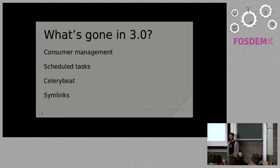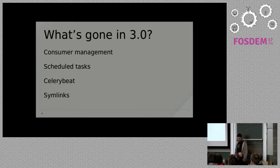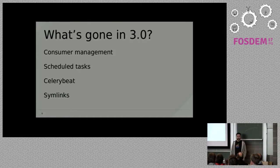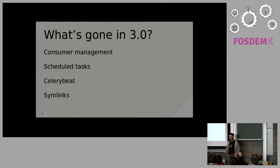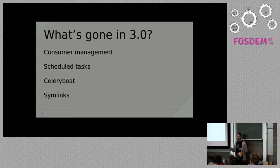Pulp 3 also removed some features. The Pulp agent that we were providing with Pulp 2 was not something we wanted to keep carrying — there are other tools like Ansible that can do a really good job of managing your machines. We also got rid of scheduled tasks; there are tools that can do this much better than Pulp, like Rundeck or cron.